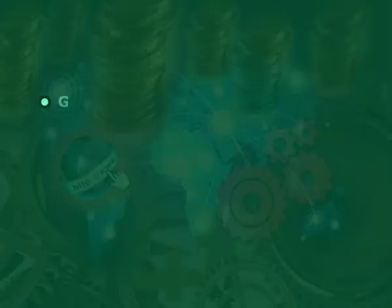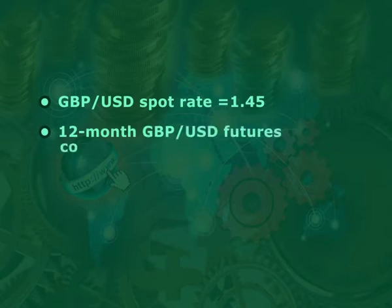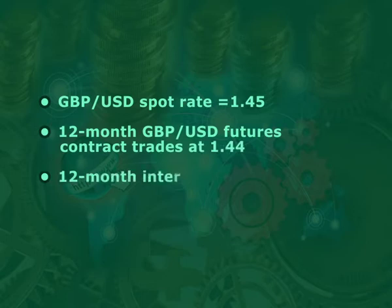Anywhere you have a financial asset derived from something else, you have the possibility of pricing discrepancies, which would allow arbitrage. The forex futures market is one such example. Suppose we have the following quotes: GBP/USD spot rate is 1.45, the 12-month GBP/USD futures contract trades at 1.44, 12-month interest on USD is 1.5%, whereas 12-month interest on GBP is 3%.